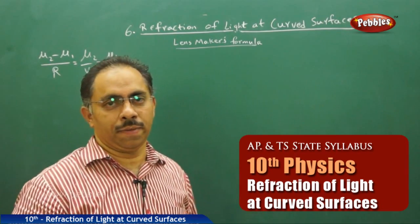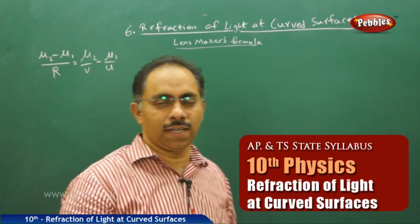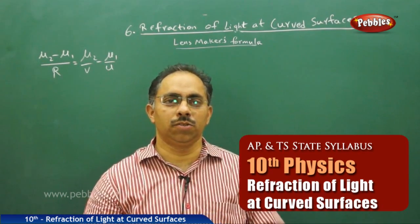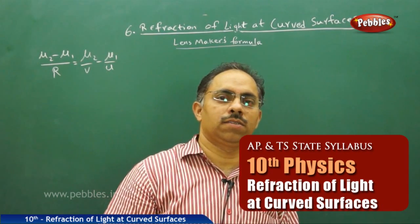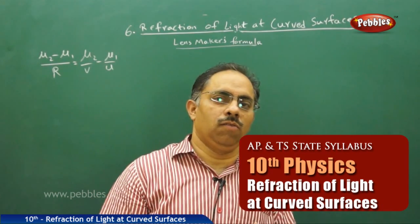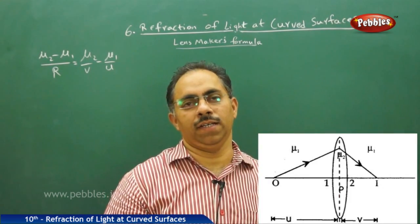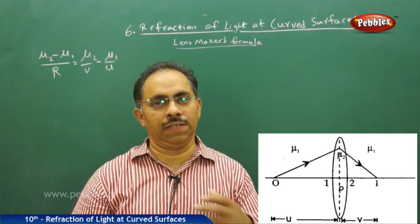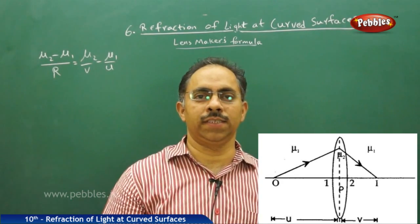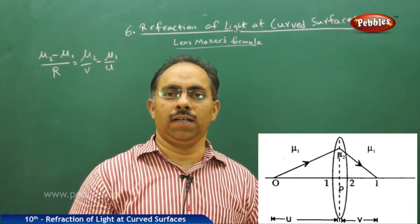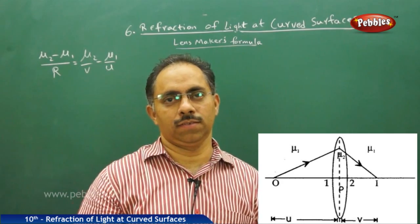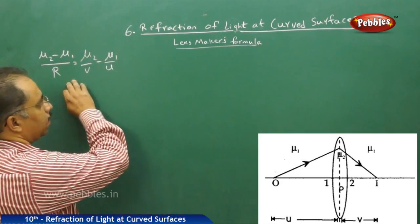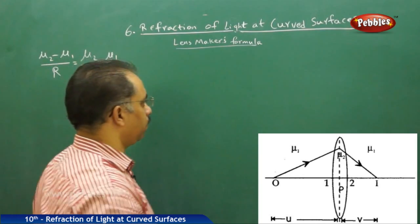Now we will see what is the Lensmaker's formula. The Lensmaker's formula is used to find out what type of material can be used to make a lens, given the refractive index, radius of curvature, and what focal length is required. We make use of this expression in the Lensmaker's formula.